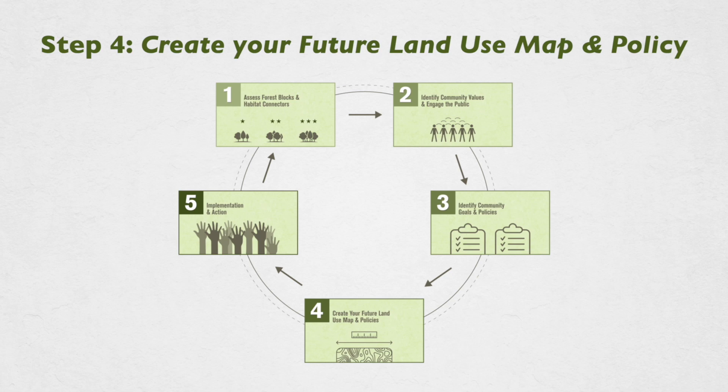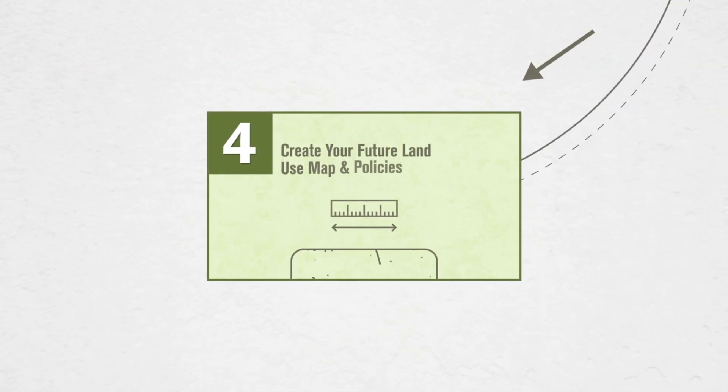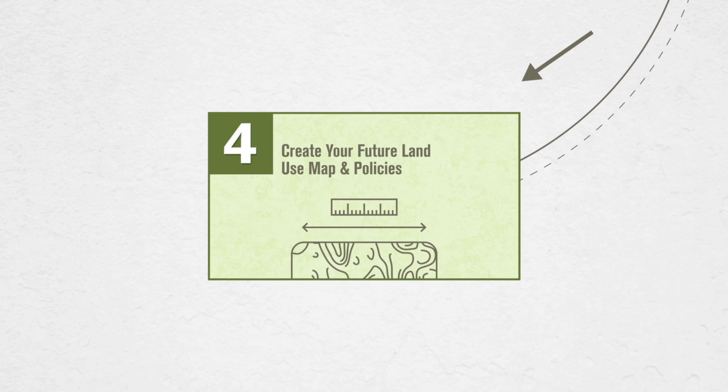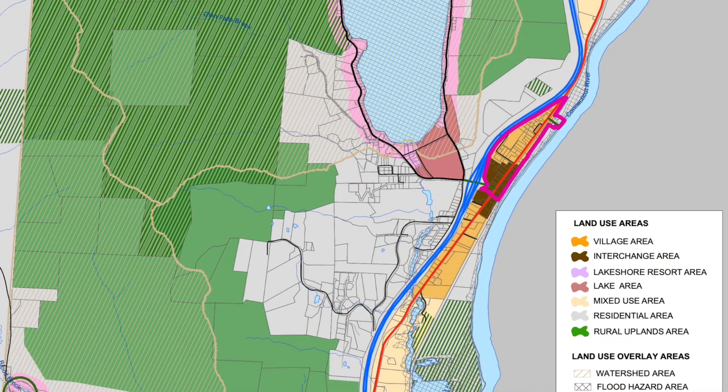In the third step, we identified goals and policies that would enable this connected forest condition. In the fourth step, we want to create a future land use map, and that's a required part of the town planning process — to really develop a map of what you want where into the future.